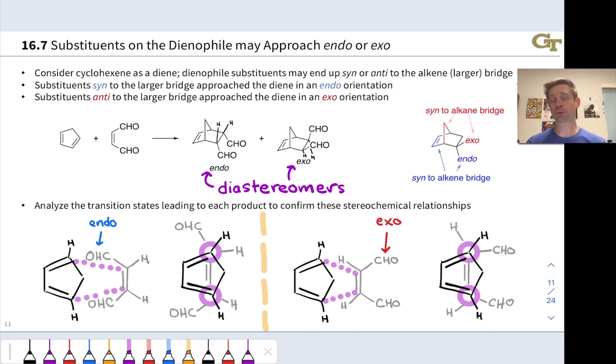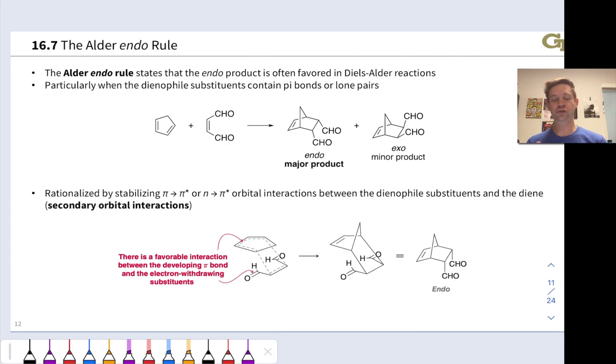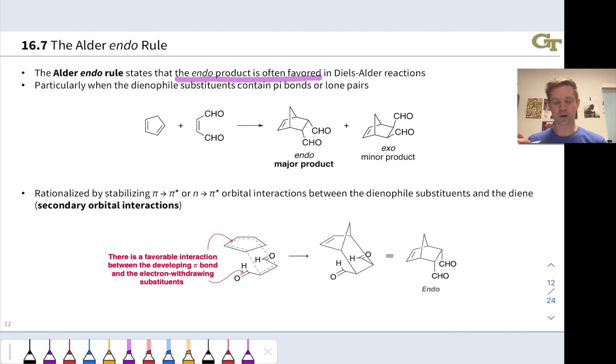Now that we understand the spatial and structural differences between the endo and exo products, the burning question is, which of these two isomers is favored? As it turns out, generally, the endo product is favored.